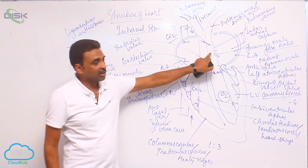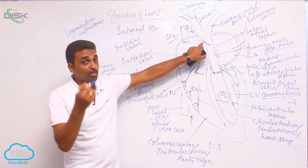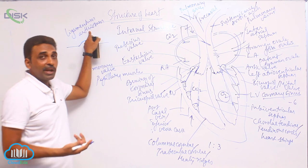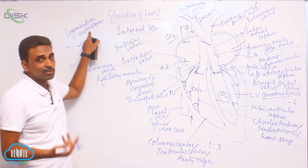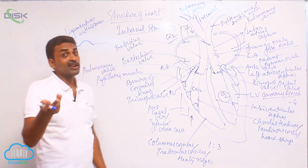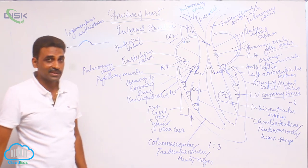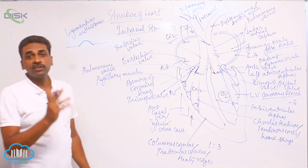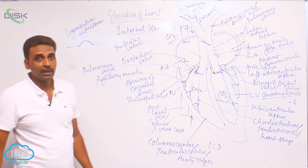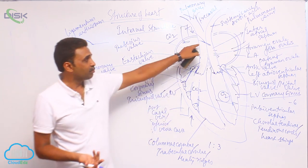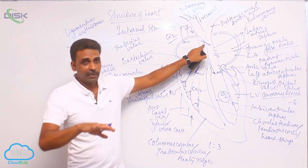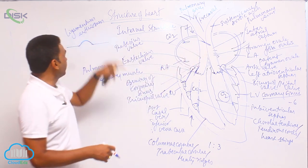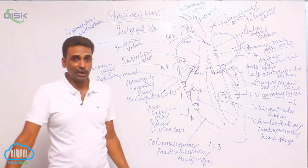The ligamentum arteriosum lies between the systemic arch and the pulmonary arch. It is a remnant of the embryonic ductus botalli, also called the ductus arteriosus, which is present between the systemic and pulmonary arches in early vertebrates. Even in the human embryo this blood vessel is present, but in adults it becomes rudimentary and non-functional, becoming a ligament called the ligamentum arteriosum.